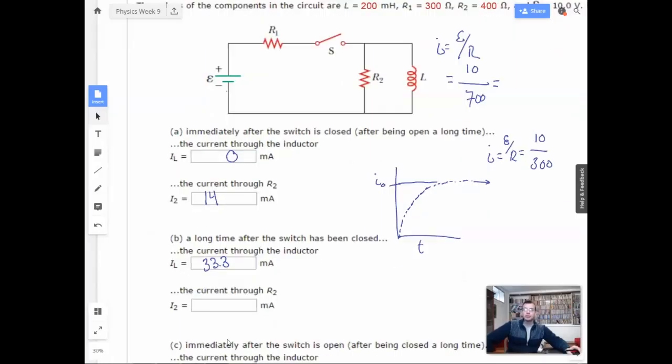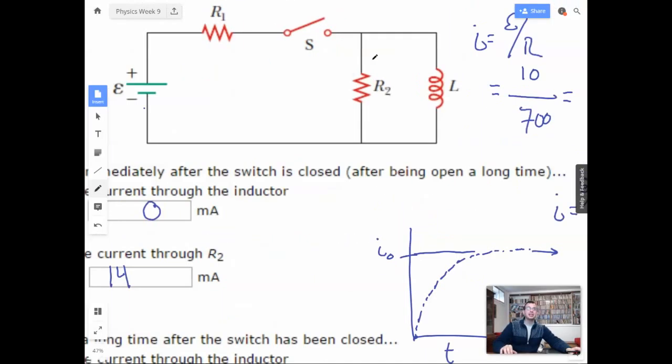Current through R2. This guy's going to be zero, because the current is going to be proportionally divided based on resistance between the two paths it has here, between the inductor and through the resistor. Well, the inductor is offering no resistance, so all the current is going to go through there.